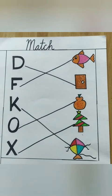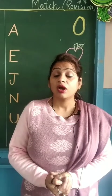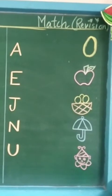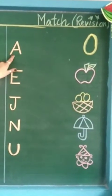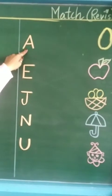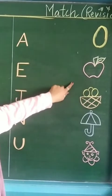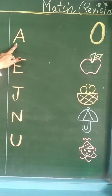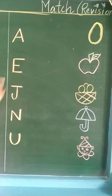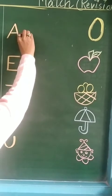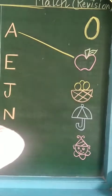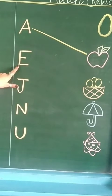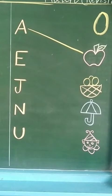So like this you have to match the letters with their related picture. Now let's do the activity of match on the board. My dear students, tell me which letter is this? This is letter A, so you have to match letter A with the related picture. A for apple, so we are going to match letter A with apple.